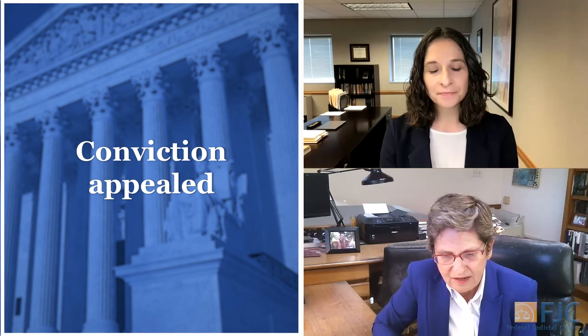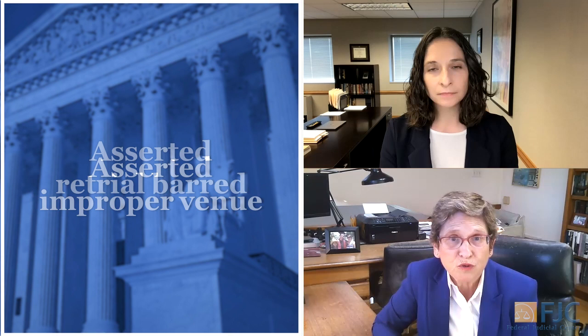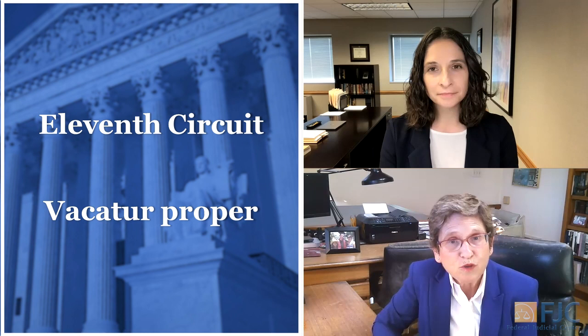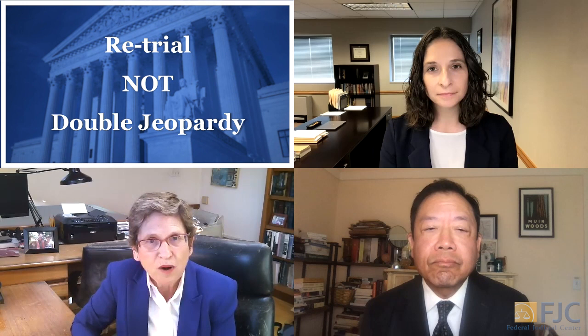The jury ended up convicting, and it went up to the 11th Circuit with the argument that this was improper venue and therefore not only should the case be dismissed, but retrial should be barred by the double jeopardy clause. The 11th Circuit said it was proper to vacate the conviction because of improper venue, but that the defendant could still be retried — that the double jeopardy clause did not bar retrial when the case was tried in the wrong venue.